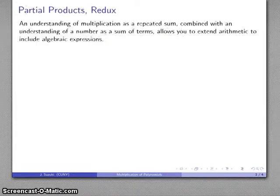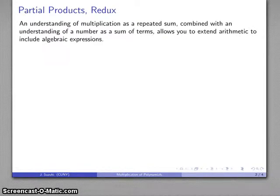So let's take a look at what happens when you multiply two polynomials. The reason that basic arithmetic is important is not so much because you need to be able to do basic arithmetic, but because it paves the path for learning algebra. In particular, the understanding of multiplication as a repeated sum, along with the understanding of a number as a sum of terms, allows us to extend arithmetic to including algebraic expressions.